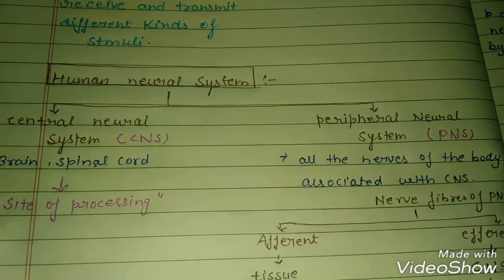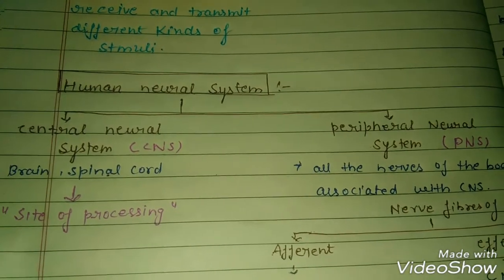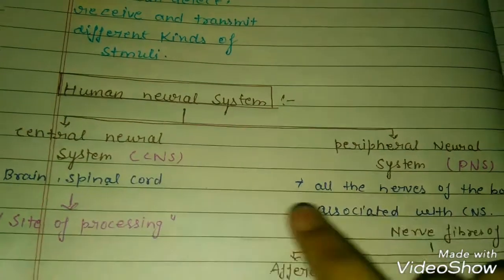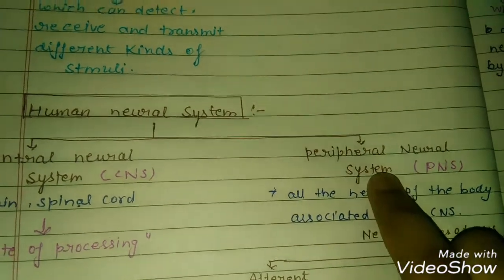We will talk about human physiology — specifically, the human neural system. The human neural system is divided into two parts: first is the Central Neural System, and second is the Peripheral Neural System.